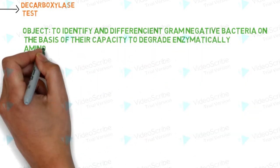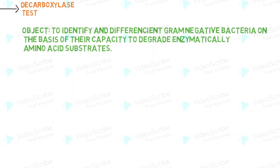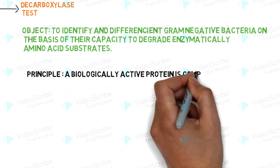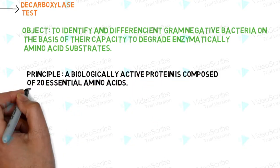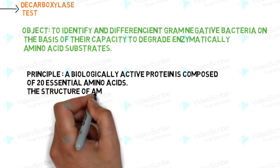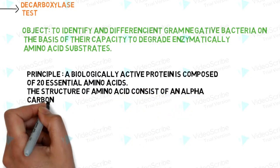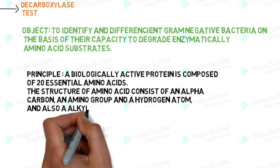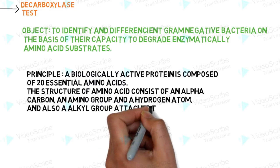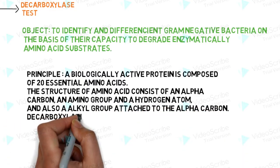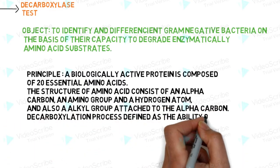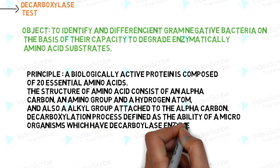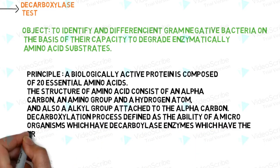Decarboxylase Test: to identify and differentiate gram-negative bacteria on the basis of their capacity to enzymatically decarboxylate amino acid substrates. Principle: a biologically active protein is composed of 20 essential amino acids. The structure of an amino acid consists of an alpha carbon, an amino group, a hydrogen atom, and an alkyl group attached to the alpha carbon.